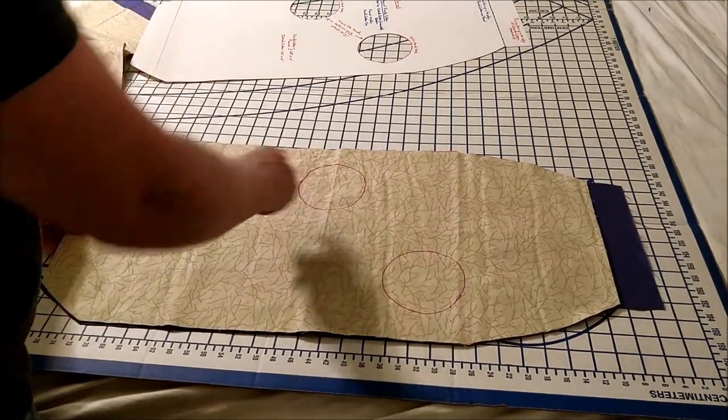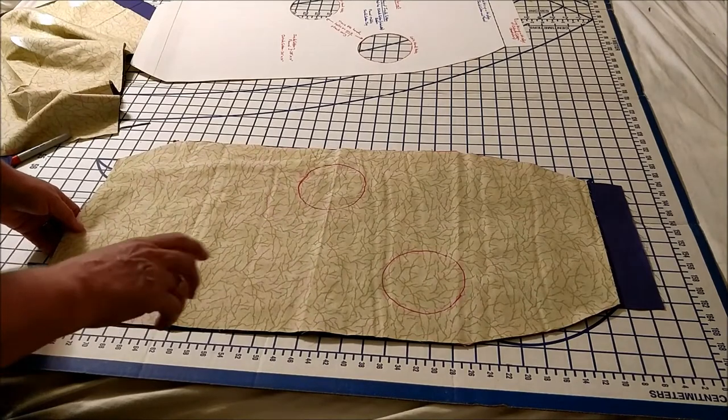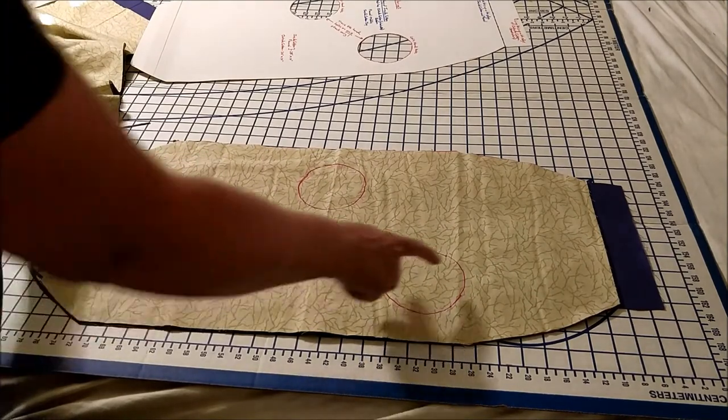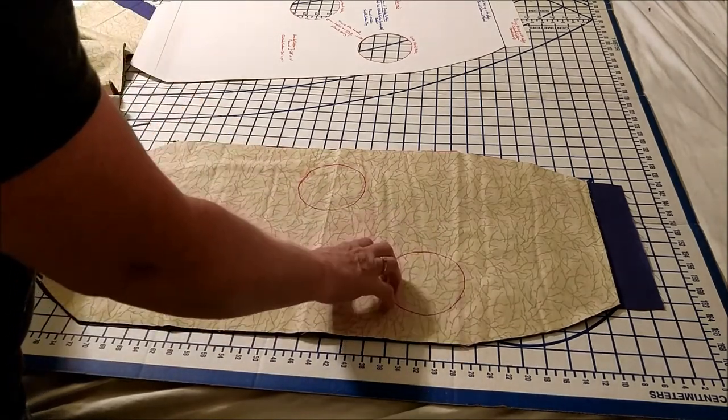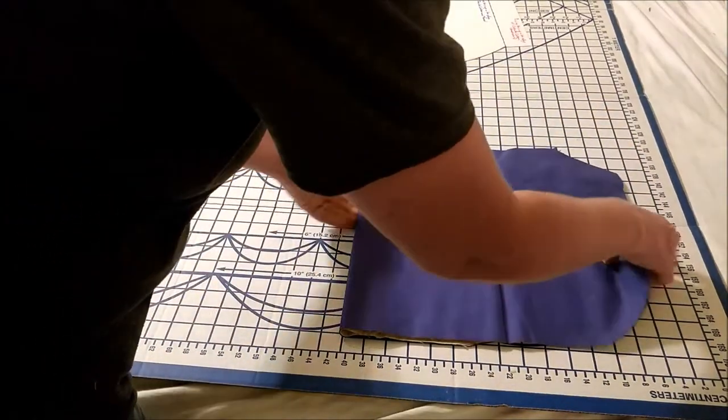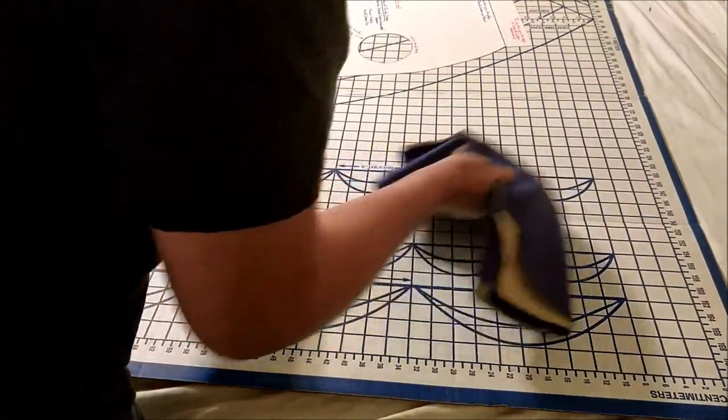We are not cutting out the hand-holds. They will get cut out later during the sewing process because we want to stitch around the outside to secure them before we cut them. So, now just fold this in half, in half again, and put it aside.